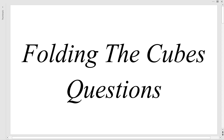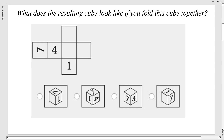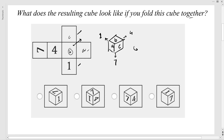Let's see what types of questions we have. The first question is: what does the resulting cube look like if you fold this net together? So if you fold this, what will you get? Say the faces are A, B, and C. By folding this we will get: B, A, and C. In front of C you will get 1, in front of A you will get 4, and in front of B you will get 7.